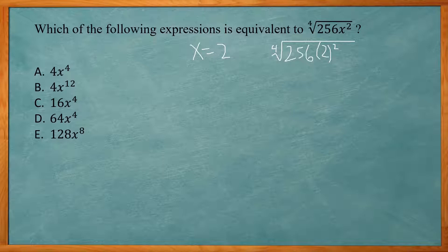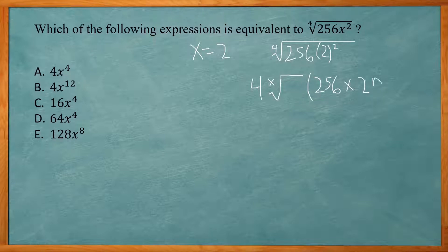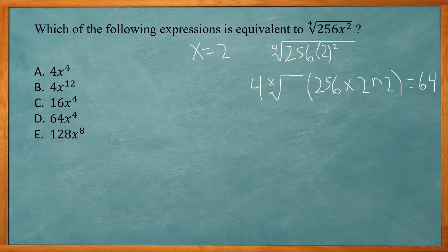You're going to need to use the calculator to figure this out. On the TI-83 and 84, type in the number 4 first, then go to Math, choose option 5 which has an x and a radical, press Enter, then put in the parenthesis, 256 times 2 to the second power, close the parenthesis, and press Enter. That is equal to 64.